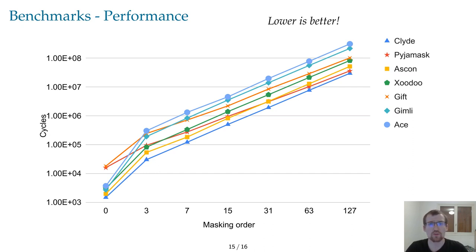We observe that ciphers with a low number of multiplications perform better at higher masking order, which is to be expected since the cost of a multiplication is quadratic in the masking order, while the cost to mask a linear operation is linear. Pyjamask, for instance, is fairly slow when unmasked because of an expensive multiplication with a constant matrix. However, since it uses less multiplications than all other ciphers except Clyde, it overtakes them one after the other. At order 127, Pyjamask is thus the second fastest cipher. Similarly, at order 127, Clyde, with the lowest amount of multiplications, is more than 10 times faster than Ace, which has the most multiplications.